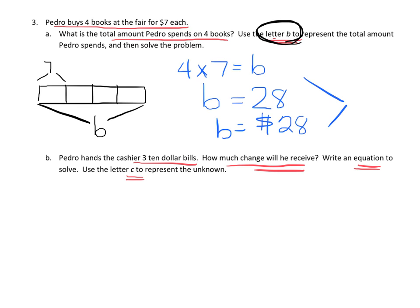So first thing I'm going to do is I'm going to draw a model for this, although some students, most students, would probably be able to do it without it. But I really want to practice drawing those tape diagrams because they're useful. So we know that the total amount is supposed to be $28, but he hands the cashier—Pedro hands the cashier $30—and so this difference is going to be our letter C for our change.